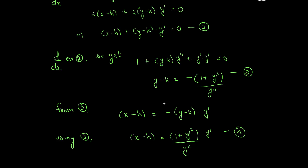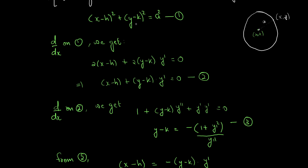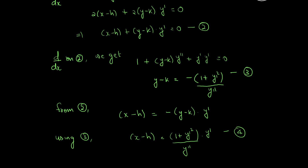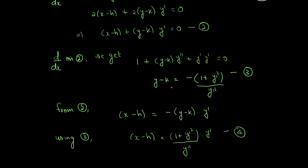Using equations 3 and 4, we can substitute the values of x minus h and y minus k into equation 1: x minus h whole square plus y minus k whole square equals A square. We now have all three required equations on the page and can proceed with the substitution.